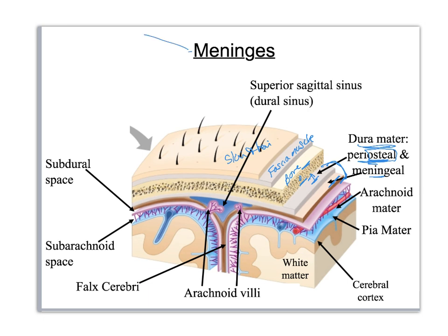You've got the three meninges: dura, arachnoid, and pia. Most of the time the dura mater is really tightly sandwiched together, but in certain areas these two layers separate and you get a little tunnel filled with venous blood. This is not a vein but it acts like one — we call this a dural sinus. Because of where this one is located it gets its own special name: superior sagittal sinus. These sinuses are created by separating the periosteal and meningeal layers of the dura mater, and they hold venous blood.